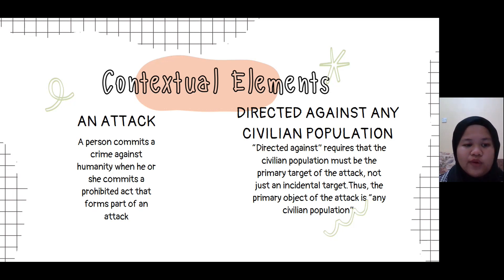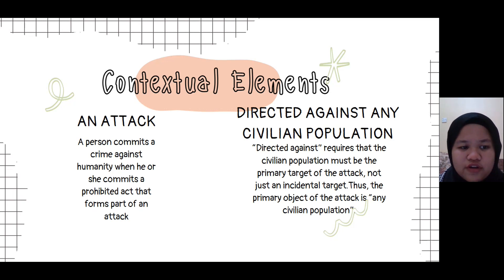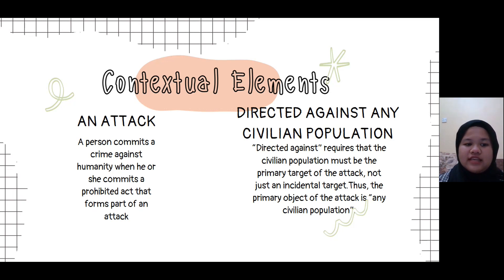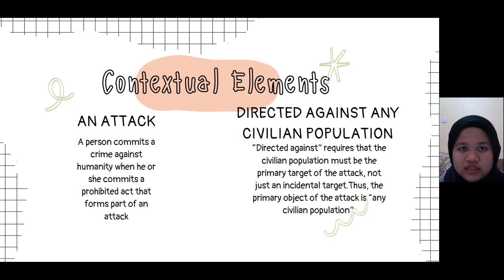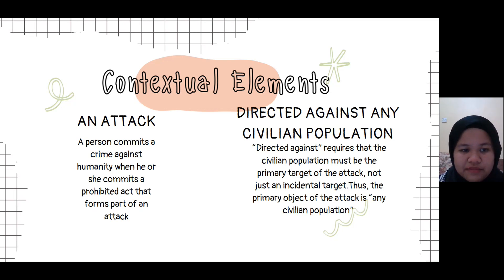The contextual elements determine that crimes against humanity involve large-scale violence in relation to the number of victims or its extension over a broad geographic area — what can be called widespread — or a methodical type of violence, referred to as systematic. This excludes random, accidental, or isolated acts of violence.